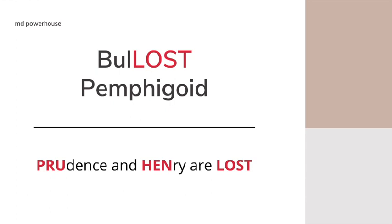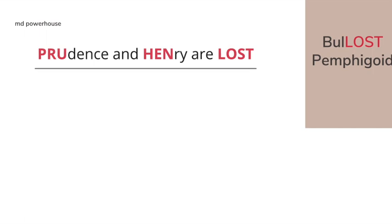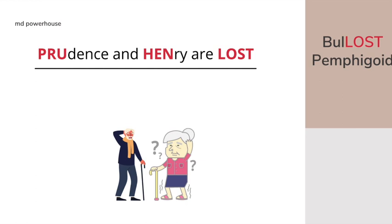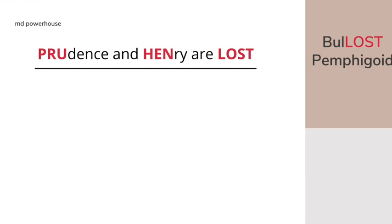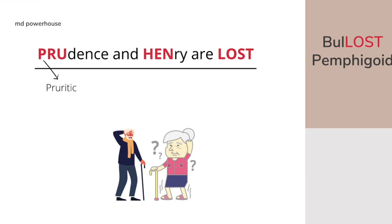Here is an image of Prudence and Henry — as you can see, they look pretty confused, they look lost. Prudence: the 'pru' helps us remember that it is a pruritic condition. And Henry kind of sounds like 'hemi,' so Henry helps us remember that the hemidesmosomes are affected. There is linear IgG against hemidesmosomes on immunofluorescence for Bollost pemphigoid.